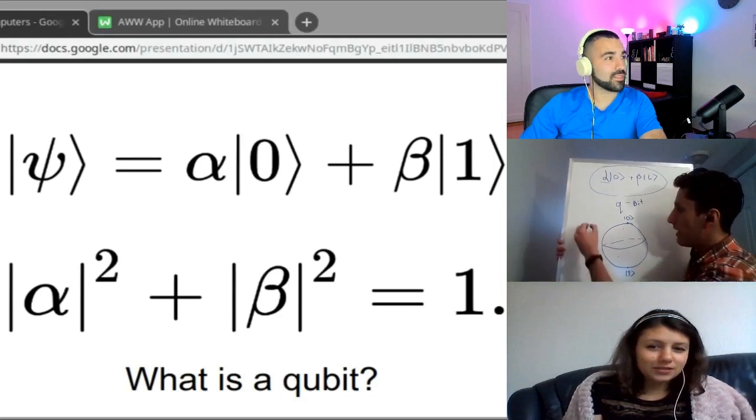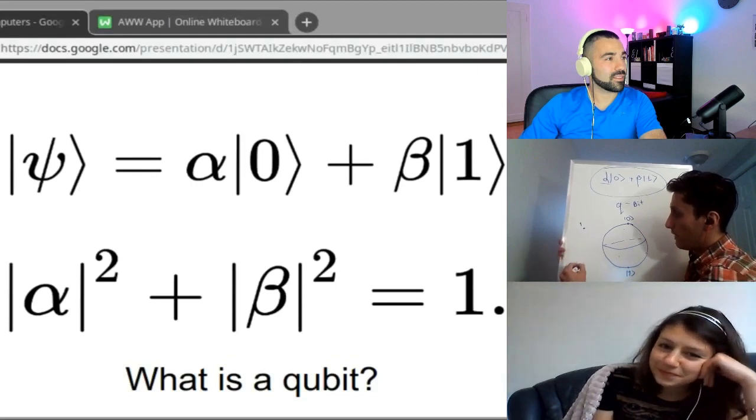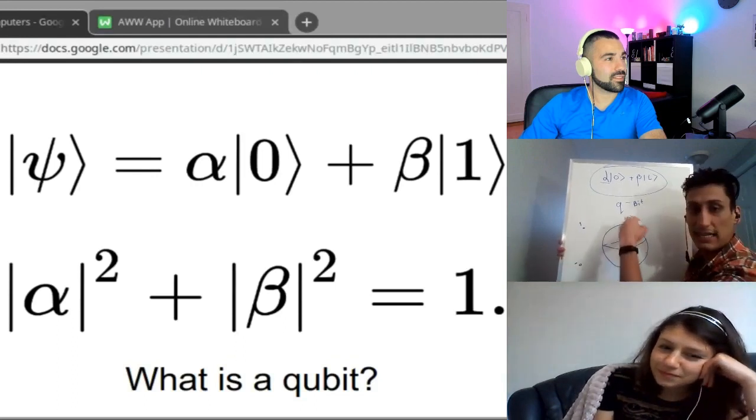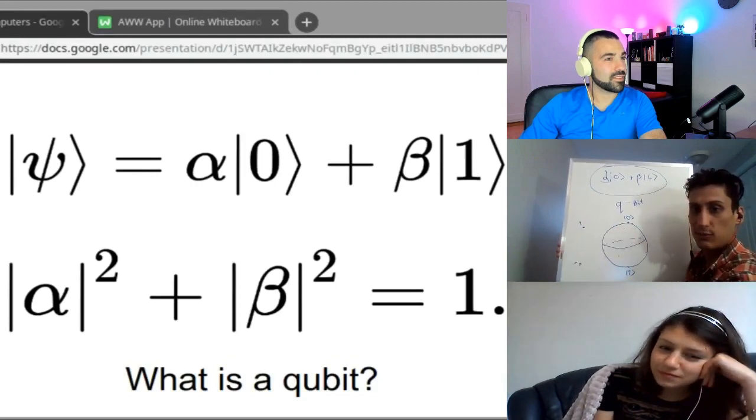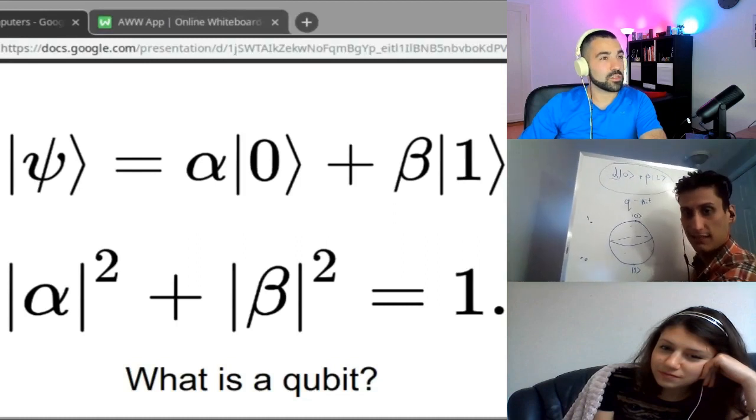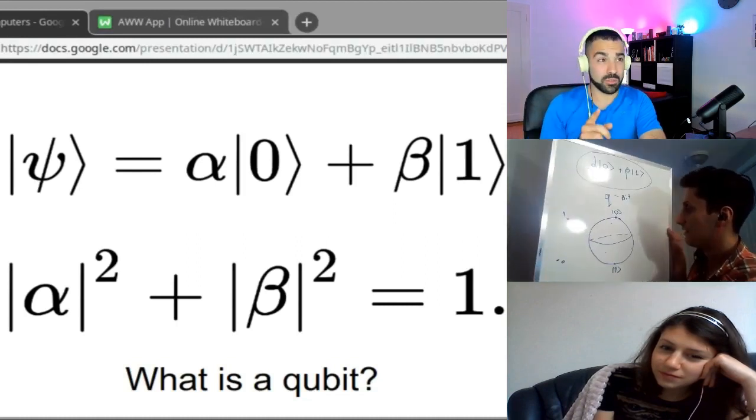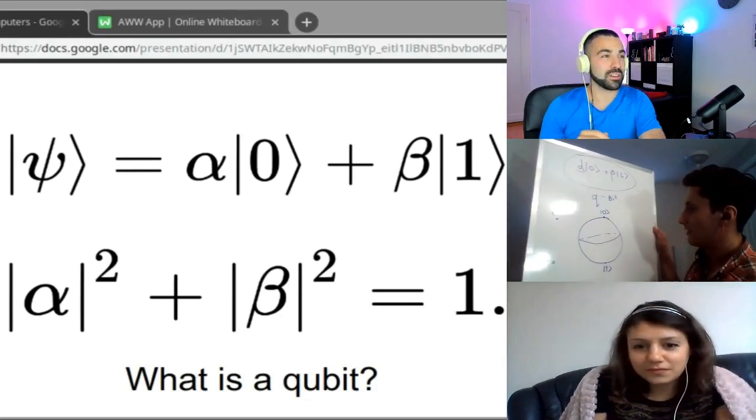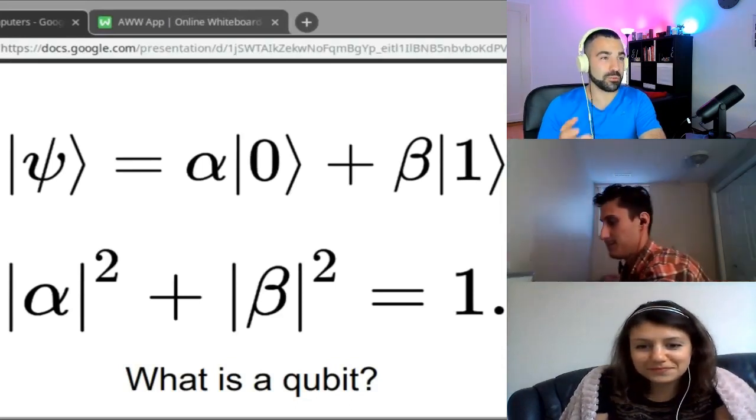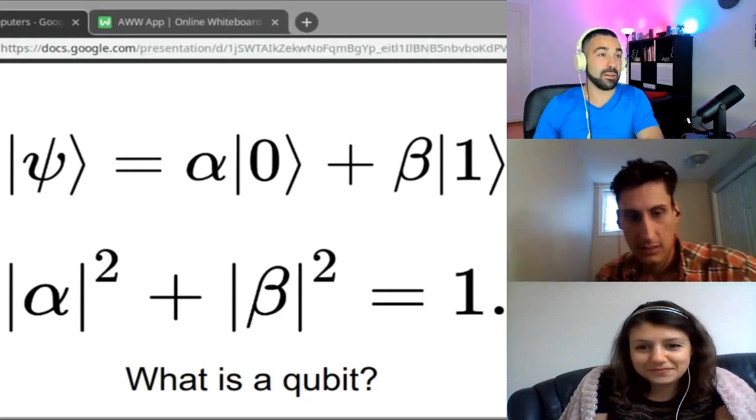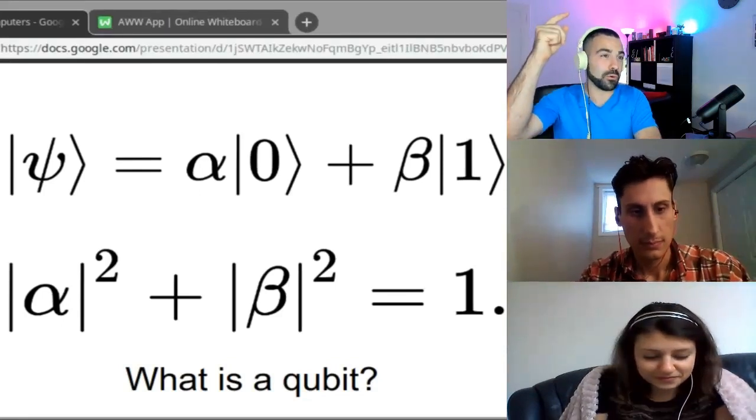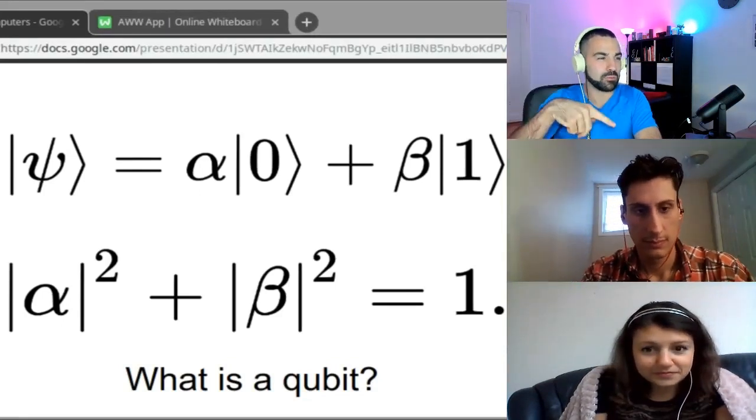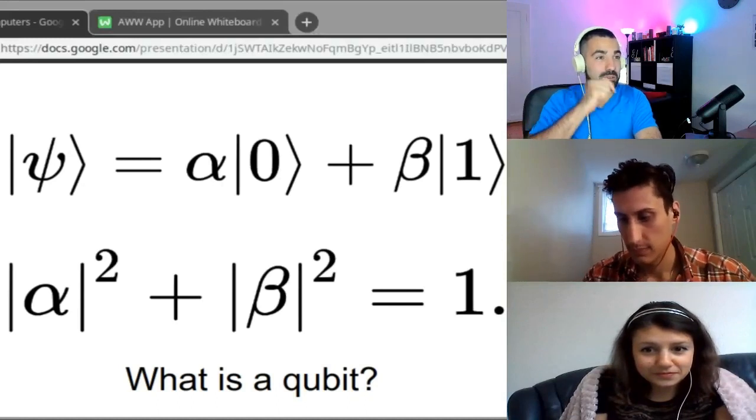So, instead of our computer, which has a one and a zero, we have infinitely many possibilities for the bit to take. Just because this podcast, first of all, just because this will become an audio podcast at some point for the listening people. So, Vasco just drew a sphere and labeled the north pole as zero and the south pole as one. And Grissi has a question.